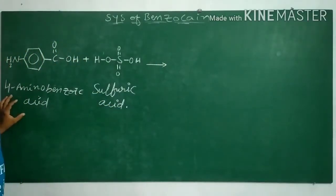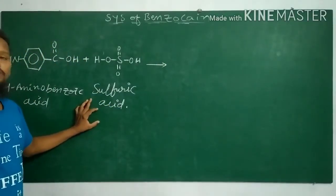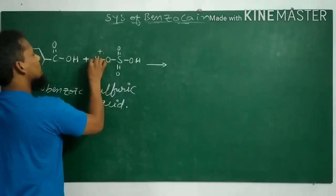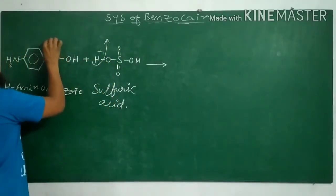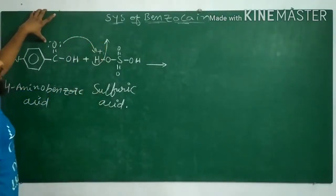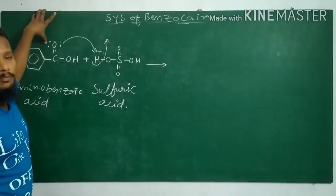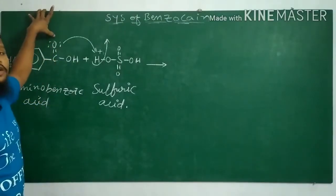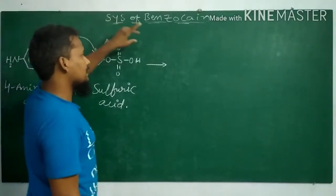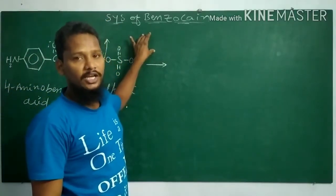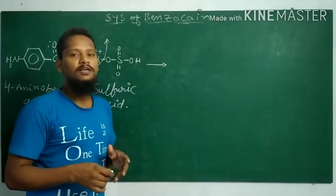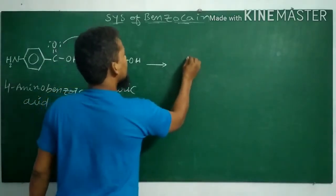Coming to the synthesis of benzocaine, our starting material is 4-aminobenzoic acid and sulfuric acid. Sulfuric acid is a proton donor, so it donates protons. The electrons are donated to the hydrogen, and now the oxygen gets a positive charge — because the oxygen donates the electrons, the donor always gets the positive charge. The acceptor gets a negative charge because the electron density on the acceptor increases, and thereby it is indicated with a negative charge.